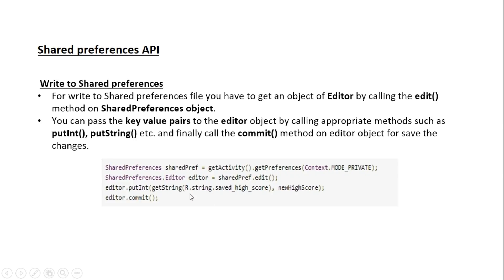To save an integer value to SharedPreferences, use the putInt method. If it is a string, use putString; if it is a boolean, use putBoolean. The first parameter is the key for the data and the second parameter is the data itself. Finally, you have to call the commit() method to save the changes.